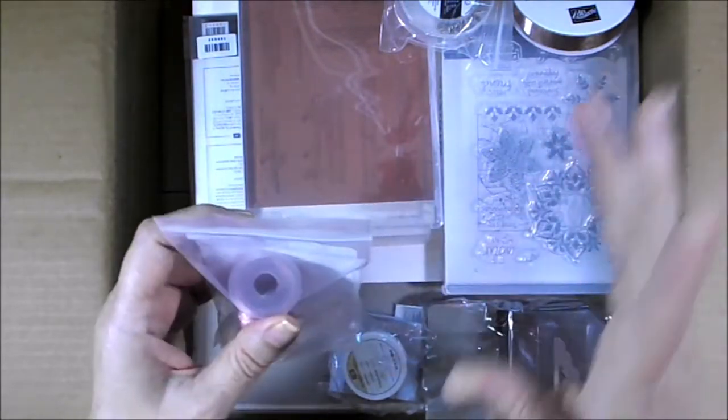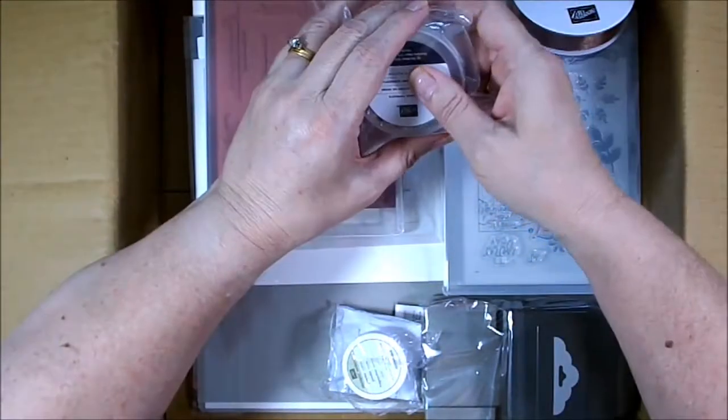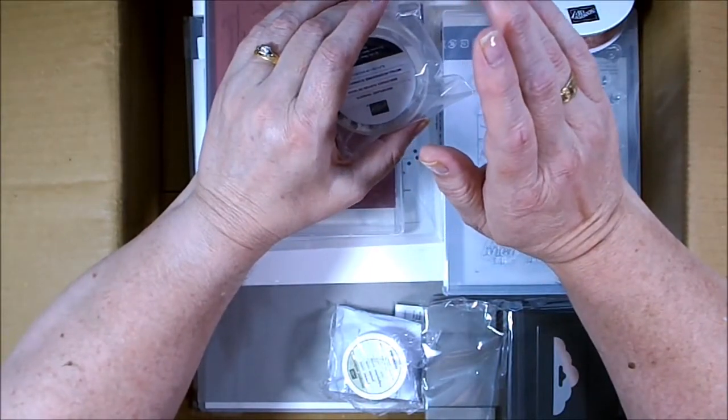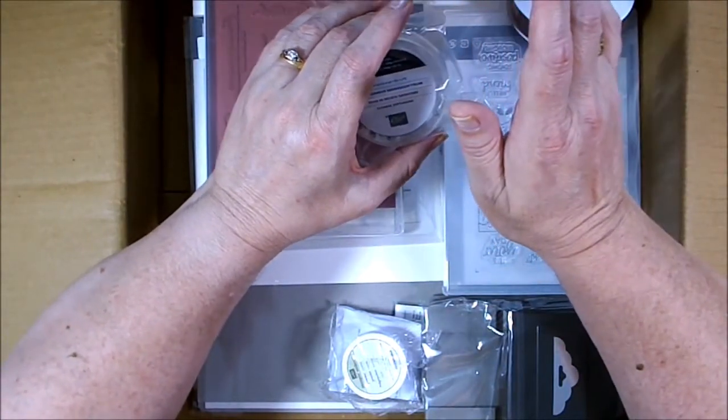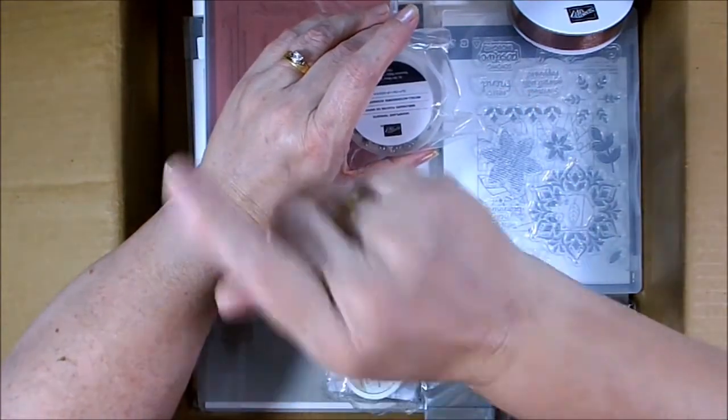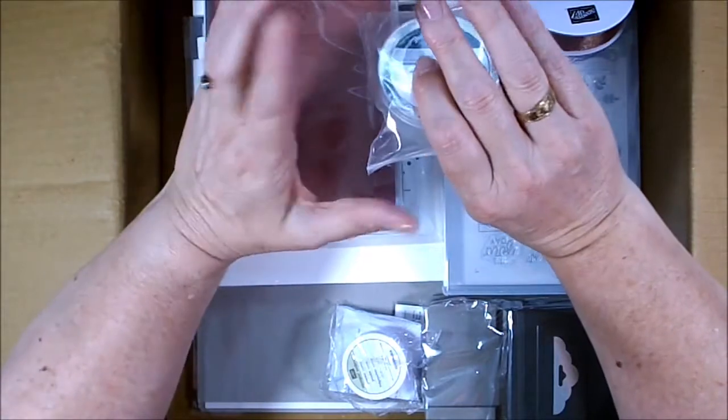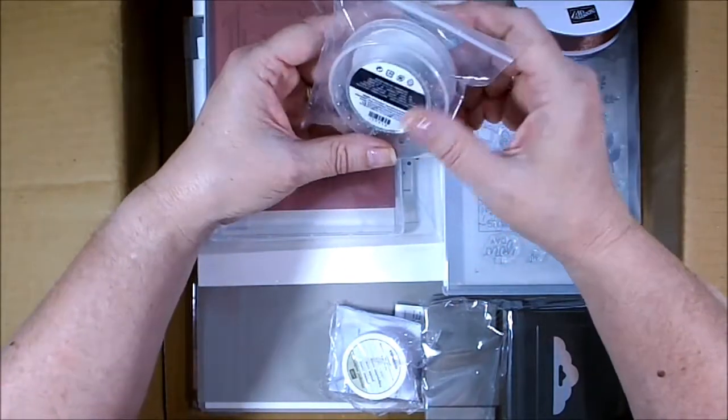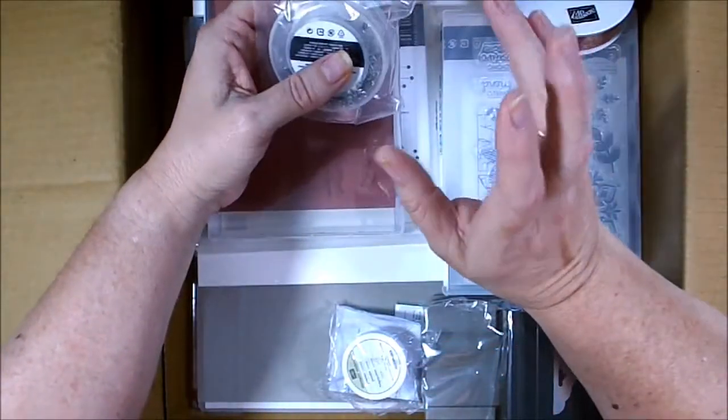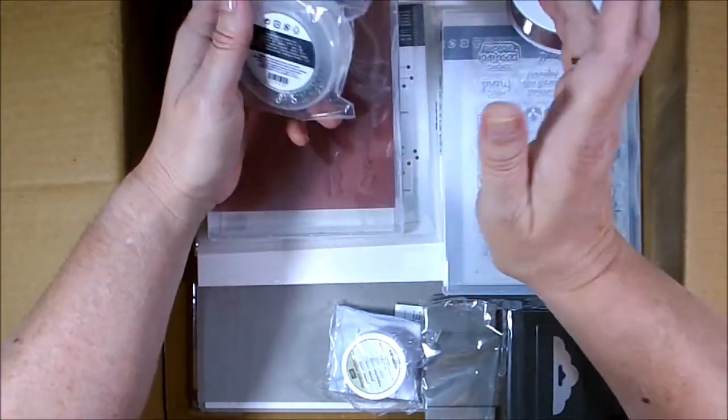One of my daughters is getting married in March next year, and we've got her kitchen tea coming up. My oldest daughter is going to be doing the kitchen tea, so that's why I wanted the Petal Promenade—I think it'll make gorgeous invitations. It doesn't matter if I've only got a couple of pieces of each paper because all of it will look stunning as invitations.